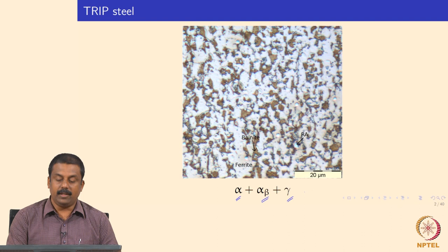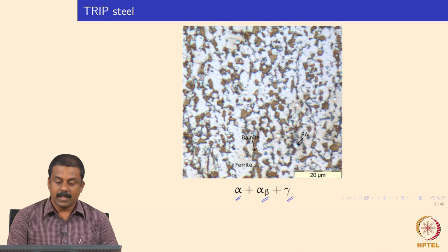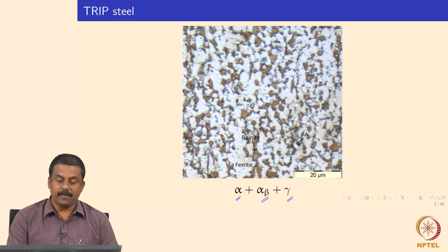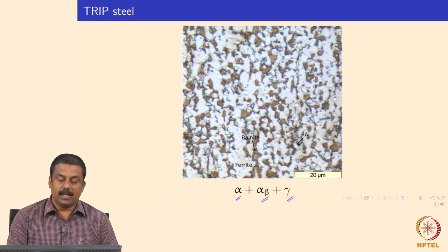These TRIP steel alloys also contain increasing amounts of manganese as well as silicon and aluminum, which also provide solid solution strengthening. We will now see how the weld thermal cycle can affect this microstructure and what the behaviors of the alloying elements are during welding.